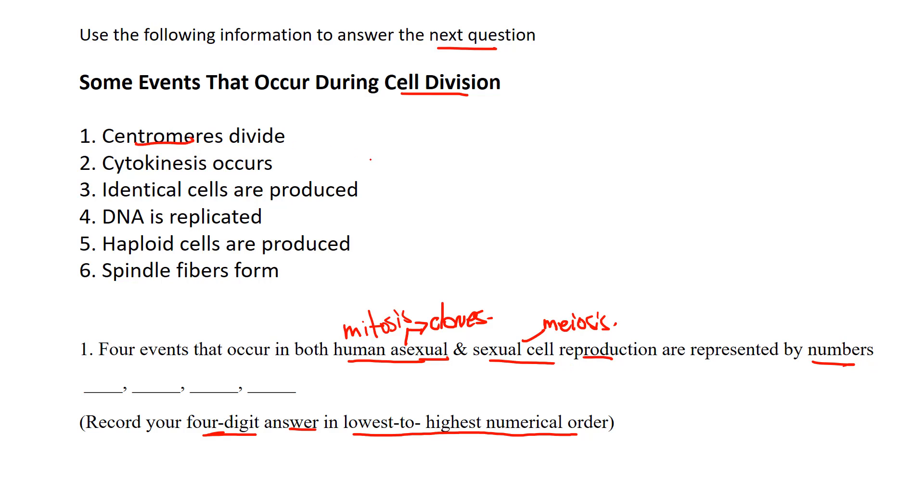So centromeres divide - we see that in both mitosis, right? At anaphase in mitosis, the spindle fibers start to shorten and it pulls sister chromatids and separates them by their centromeres. But that also occurred in meiosis. It didn't occur in anaphase one because we're separating homologous pairs, but in anaphase two, yes, we separated those centromeres and separated those sister chromatids.